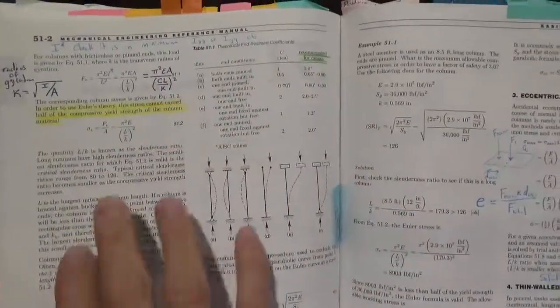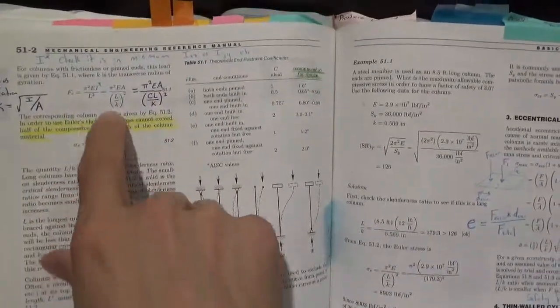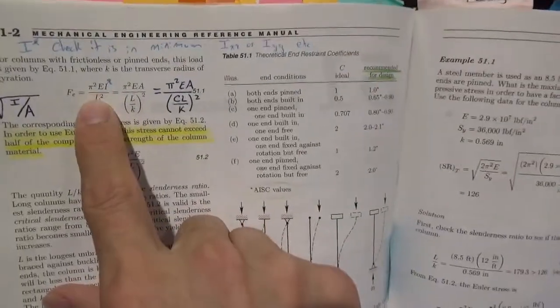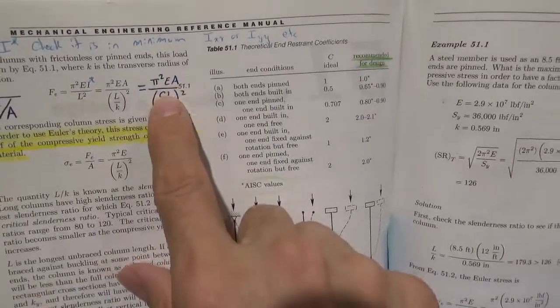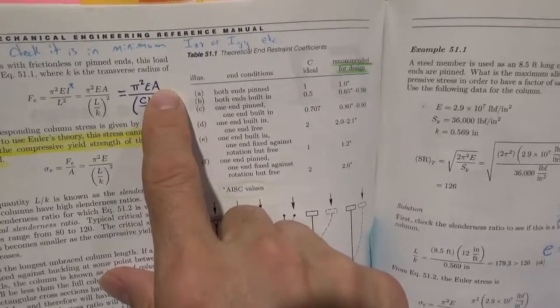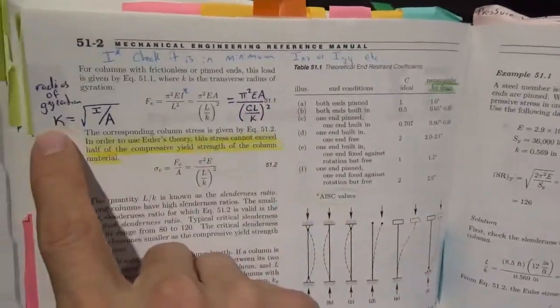So right here, if you use this equation, you can actually turn that EI, the flexural rigidity, in terms of an EA, and that's via the radius of gyration here.